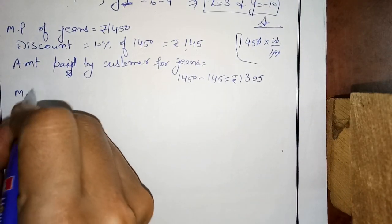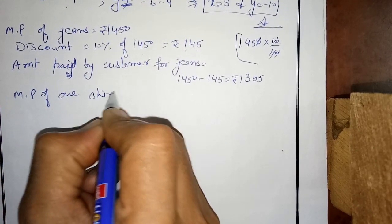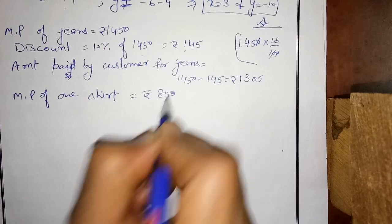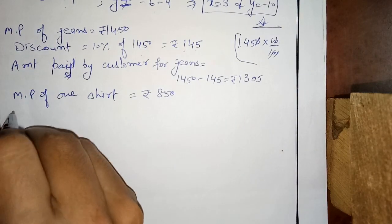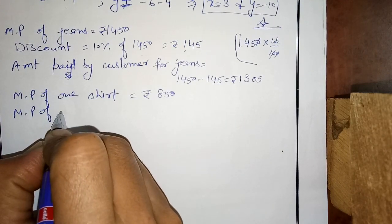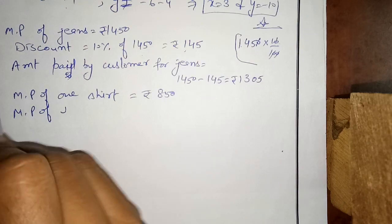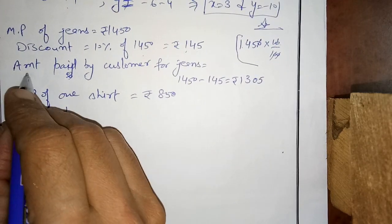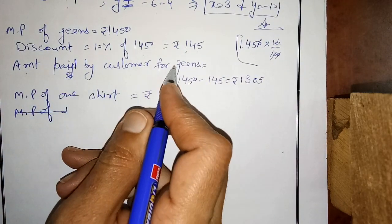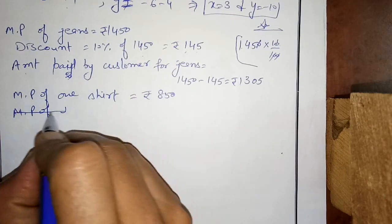Now, marked price of one shirt is Rs. 8.50. For two shirts, we first find the discount and amount paid for one shirt, then calculate for two shirts — that will be easier.